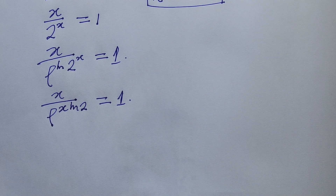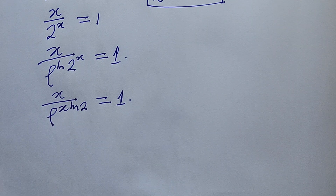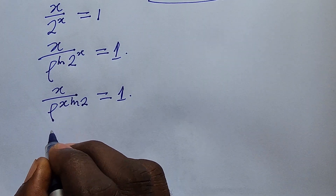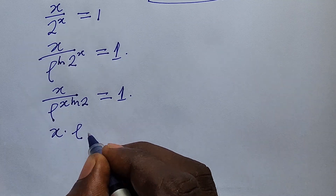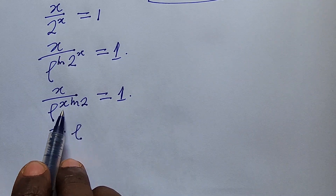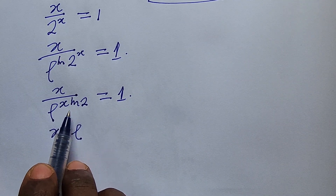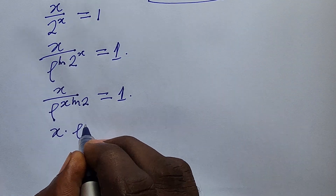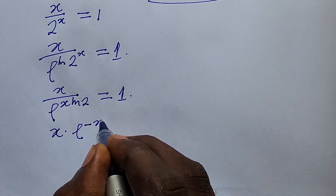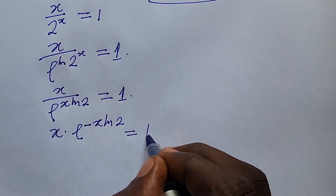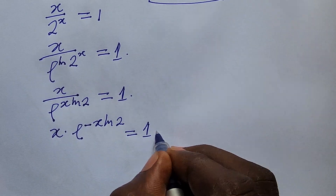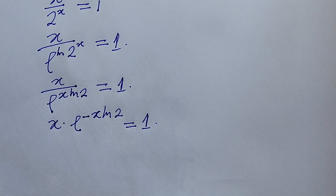According to the law of indices, we can remove the division sign, so this gives us x times e to the power of minus x·ln(2), everything equal to 1. We now want to invoke the Lambert W function.